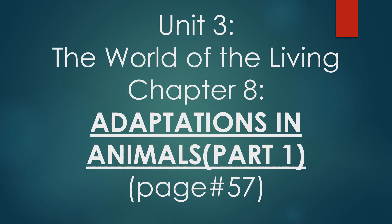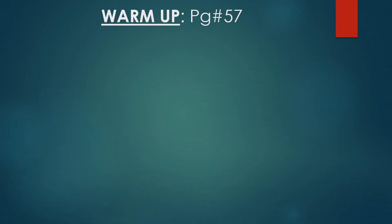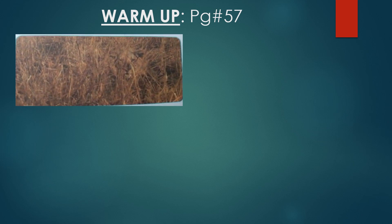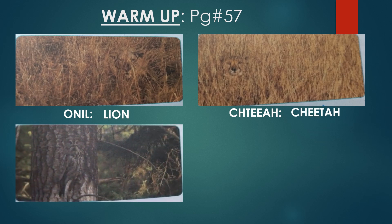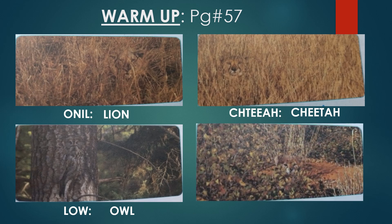I hope everyone is with me. Let's start the chapter with the warm-up as usual on page number 57. There are animals hiding in the picture and some scrambled words you have to unscramble. The first picture has a lion, the second is a cheetah, the third - with the help word - is an owl, and the fourth is an easy one: fox.